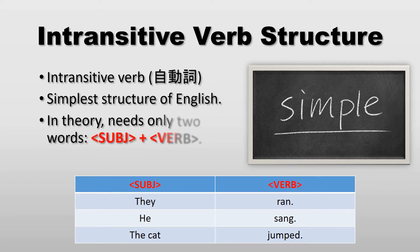In theory, a sentence made with an intransitive verb needs only two words: a subject and a verb. Look at these examples: They ran. He sang. The cat jumped.